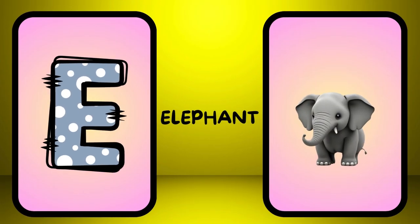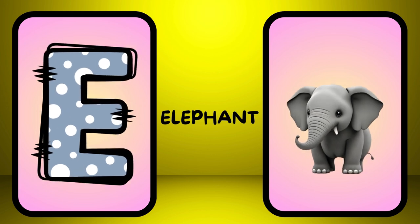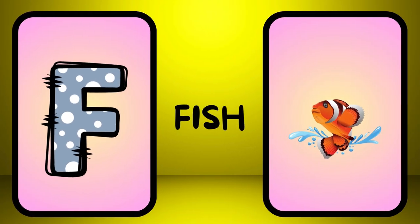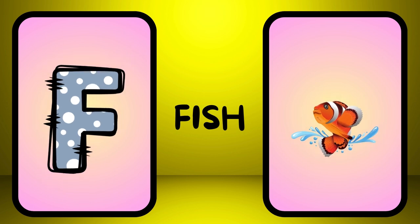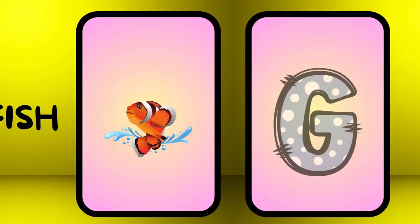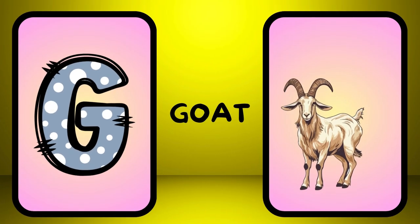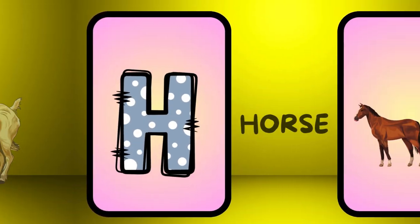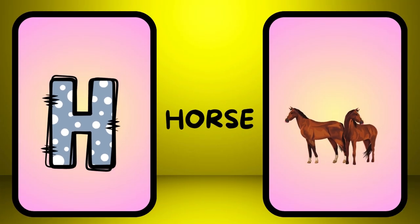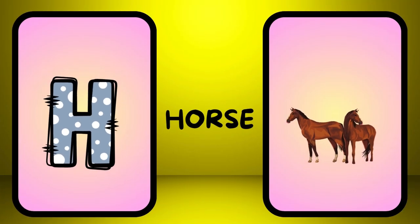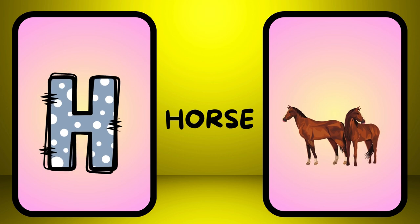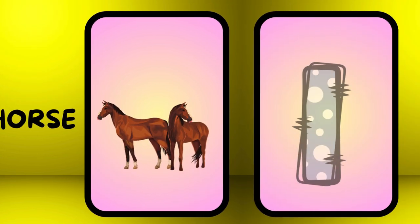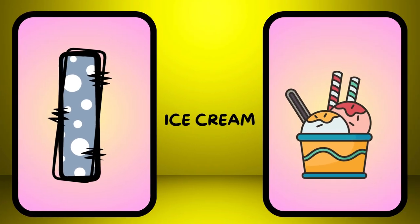E is for elephant, e-e-elephant. F is for fish, f-f-fish. G is for goat, g-g-goat. H is for horse, h-h-horse.